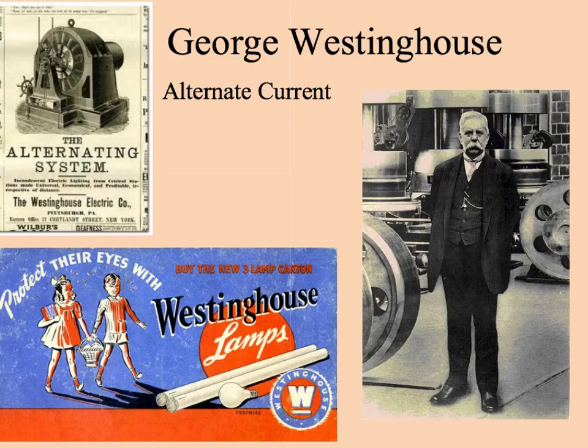Whereas Edison worked with electricity in direct current (DC), George Westinghouse worked to improve that and created alternating current (AC). Alternating current was easier and a safer way of providing electricity to businesses and homes, and it could travel further distances. It was definitely an improvement upon Edison's direct current — that's why on radios or things you plug in, there's sometimes an AC/DC switch. There's a difference between using a battery (direct current) or plugging into the wall (alternating current).